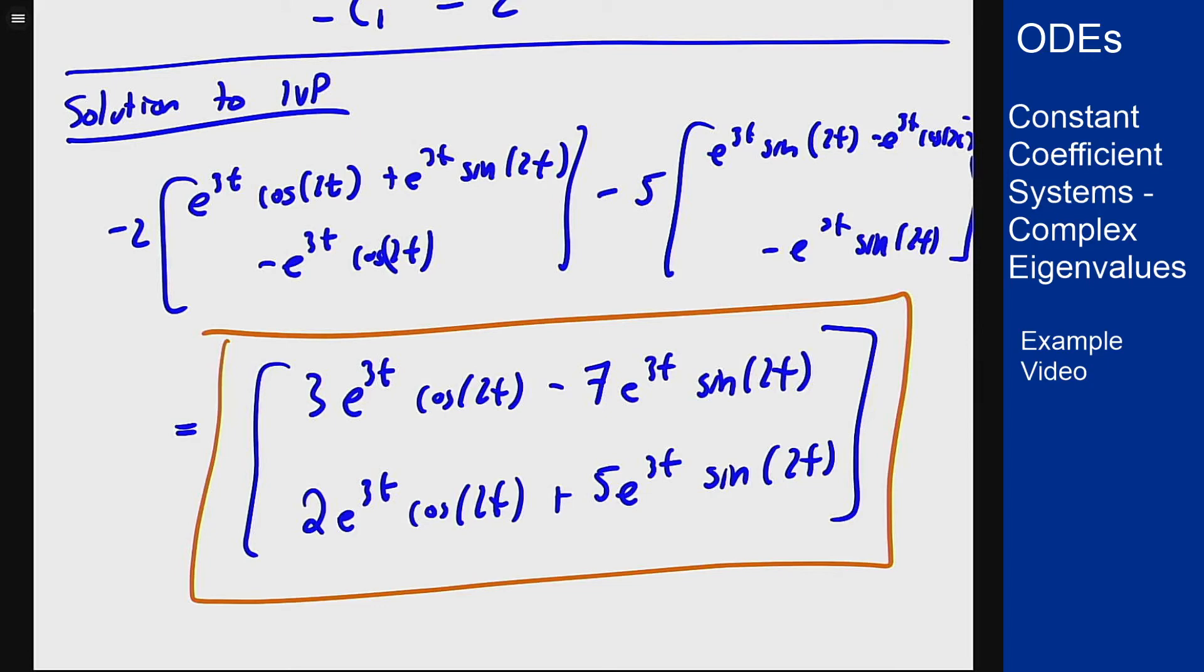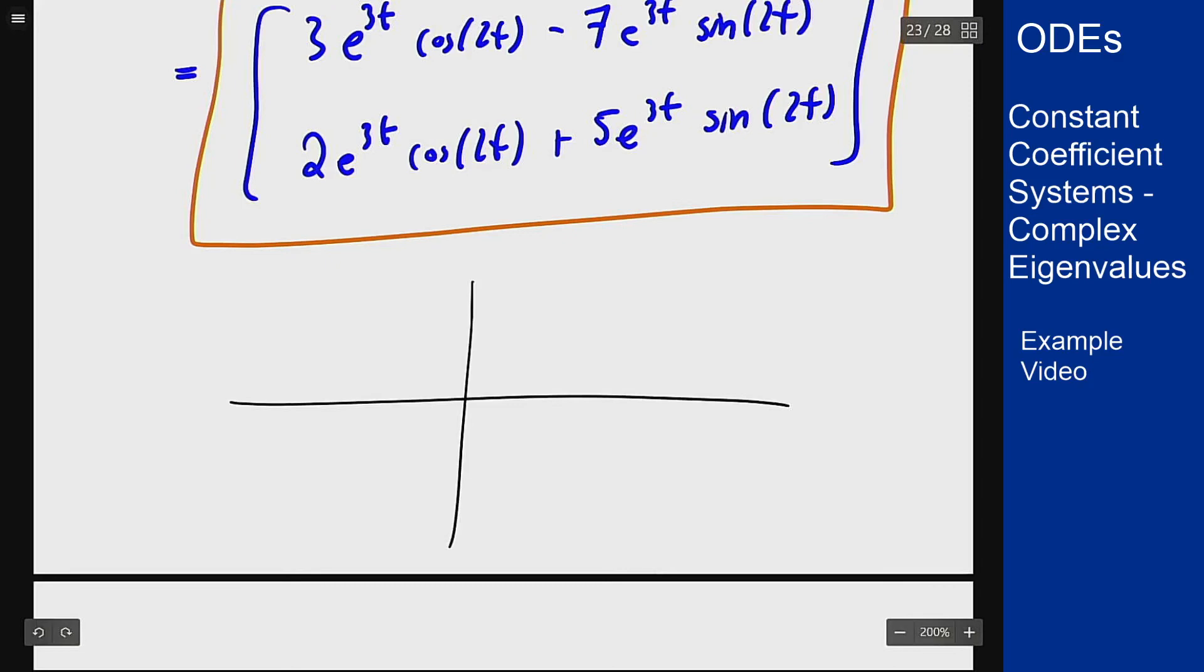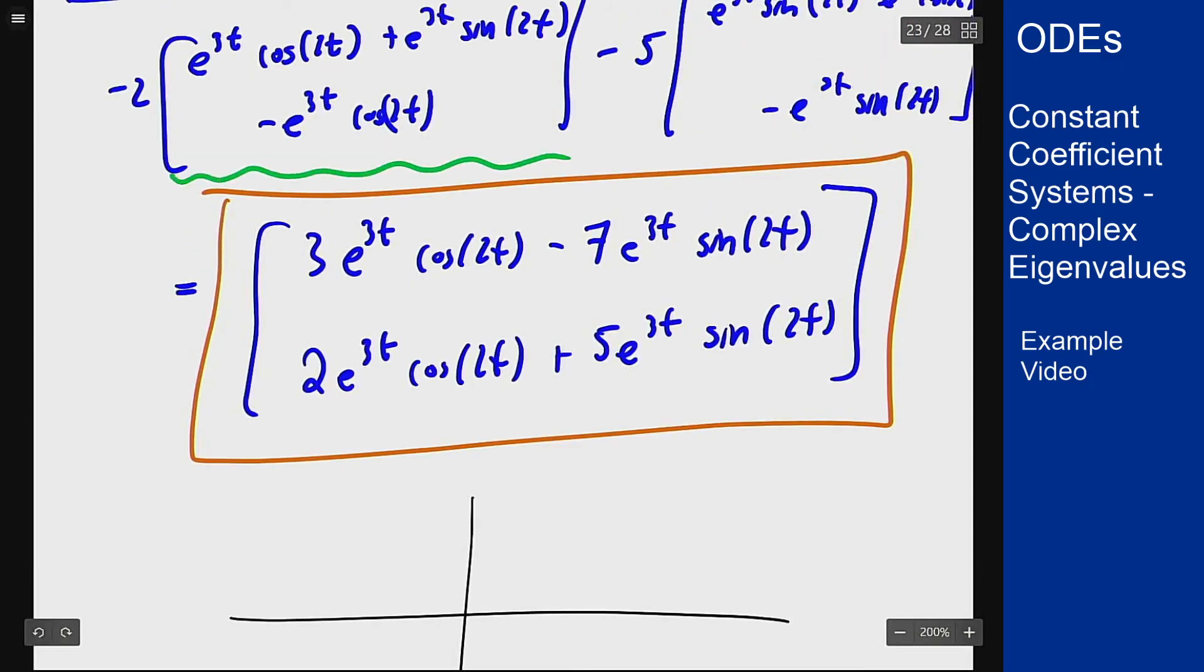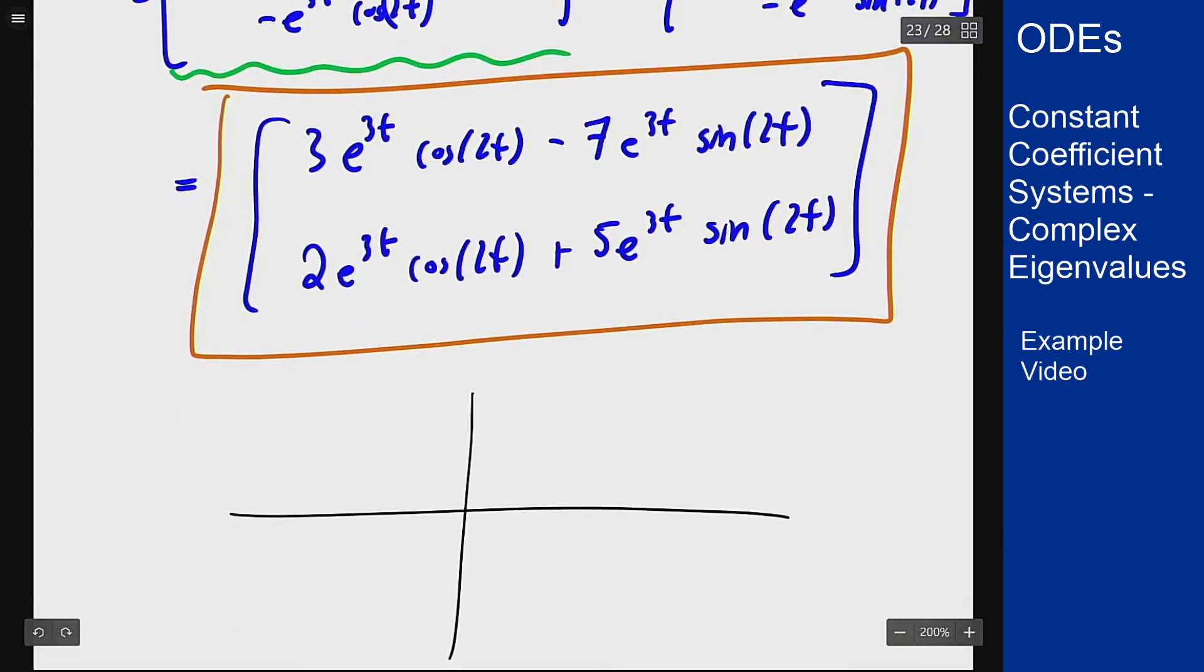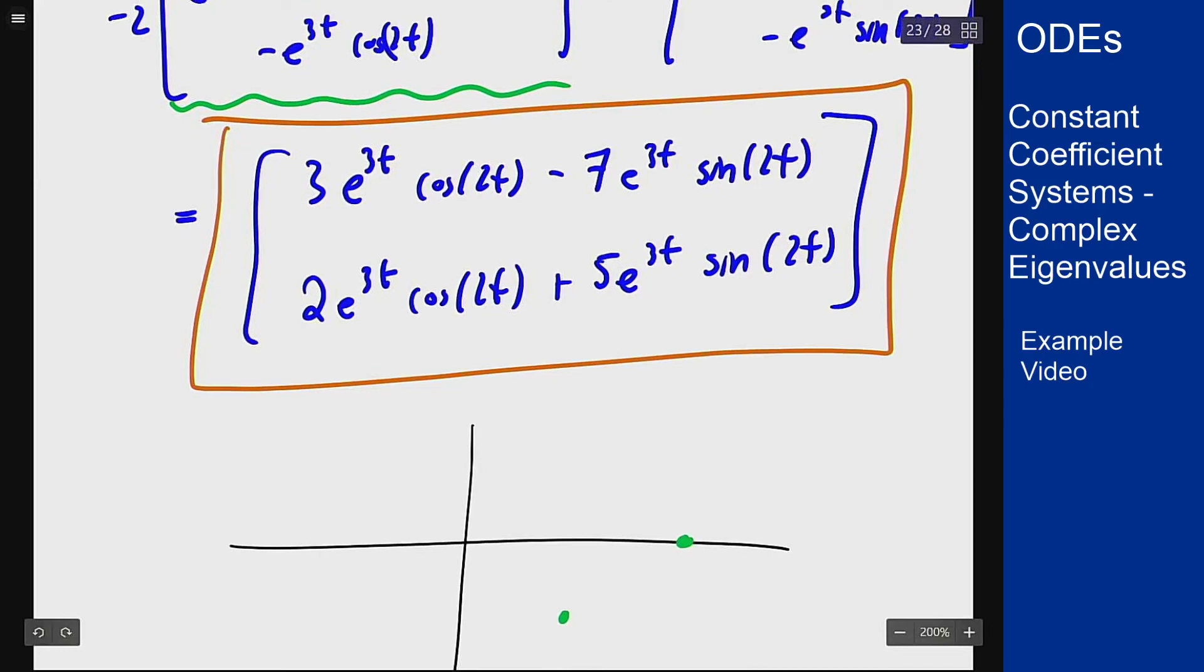Now what does the phase portrait look like here? Well we can start by drawing some axes. Let's look at this first solution, this green solution. At t = 0 it's at (1, -1), so it's down here. And then at t = π/4, because that's going to make cosine go to 0, it is at positive e^(3π/4) and 0, so it's up here. And again we are a spiral source so we know we are spiraling in this general direction.